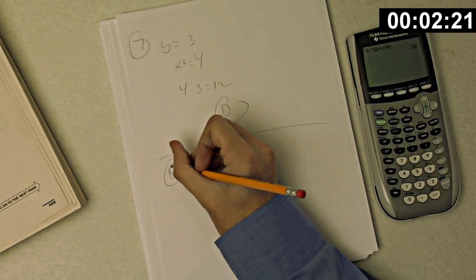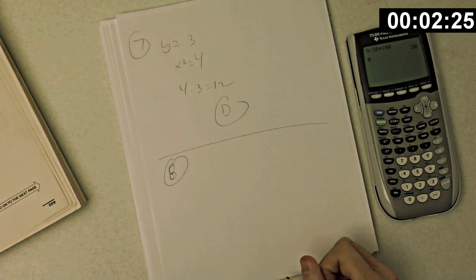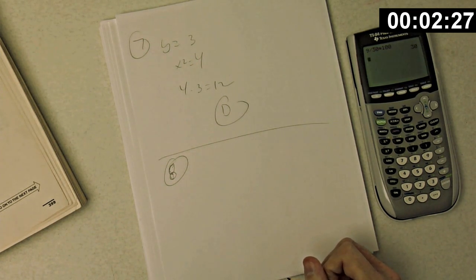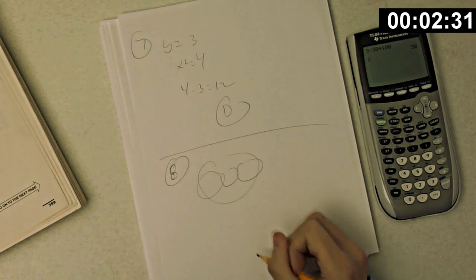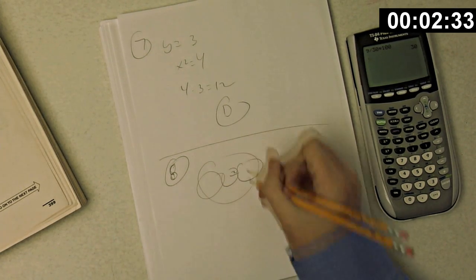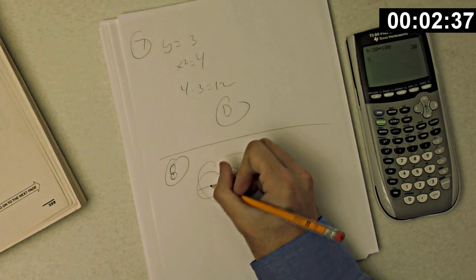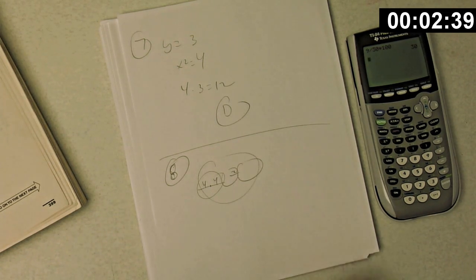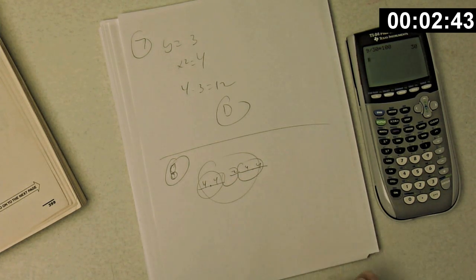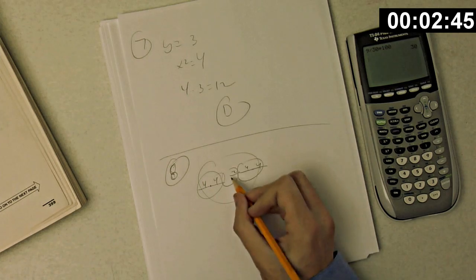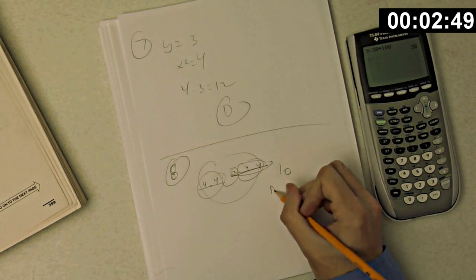Number eight. In the figure above the circles are tangent as shown and the center circle A is also the center of the largest circle. The radius of circle A is 2, so that's 2. The radius of circle B is 4, so let's see. That's 4, and that's 4, and the radius of circle C is 4. That's 4, and that's 4. What is the radius of the largest circle? So that would be 4 and 4 is 8 plus 2 is 10. That's choice D.